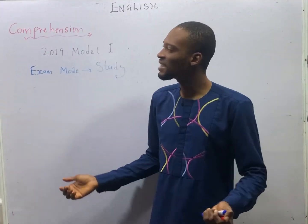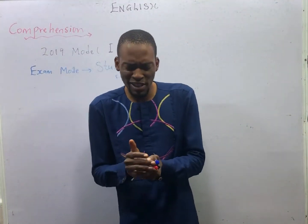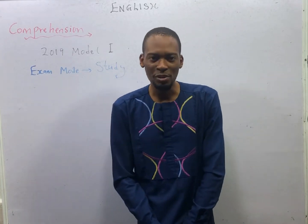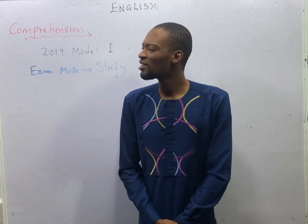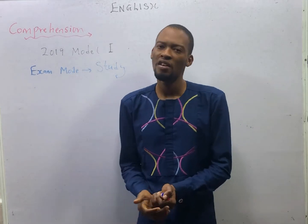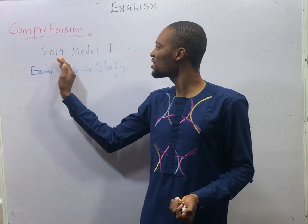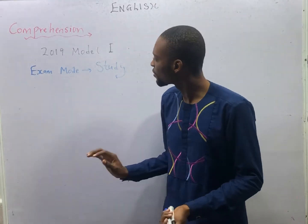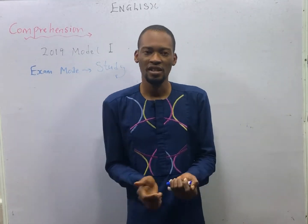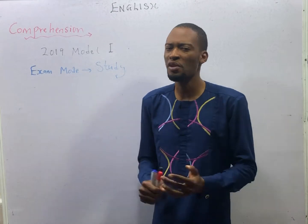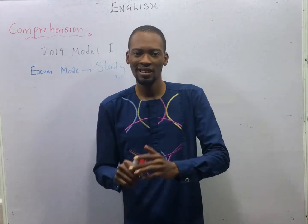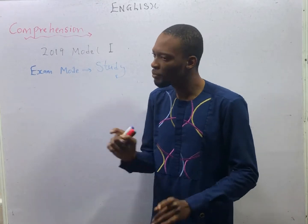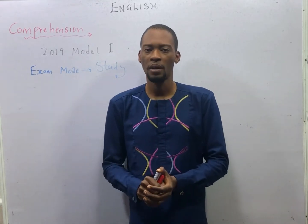This is episode number 37 of the 120 days to jam Use of English with Flash Isaac. In this episode, we shall be answering comprehension passages from 2019 model 1 of the Flash Learners Jam application. This series will focus on many comprehension passages. We shall answer a lot of comprehension passages, and we have already answered up to 3 or 4 passages.